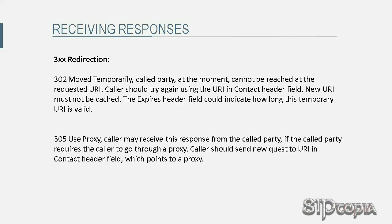305 Use Proxy: the caller may receive this response from a called party if the called party requires the caller to go through a proxy. After receiving this response, the caller should send a new request to the URI in the response's contact header field, which points to a proxy. For example, if Tarzan calls Jane but the camp security is so tight that Tarzan has to go through another SIP proxy to talk to Jane, Jane's phone could respond with 305 Use Proxy and provide Tarzan the SIP proxy to use in the contact header field.